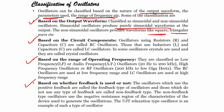Based on circuit components, oscillators using resistors and capacitors are called RC oscillators. Those which require inductors and capacitors are called LC oscillators. In some oscillators, crystals are used and they are called crystal oscillators. It is very easy to remember based on circuit components.